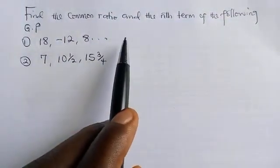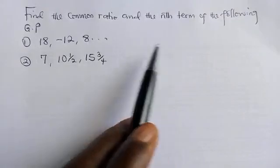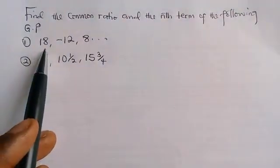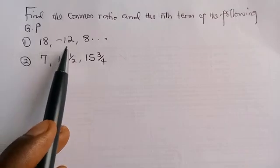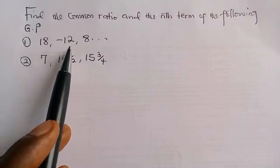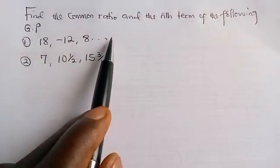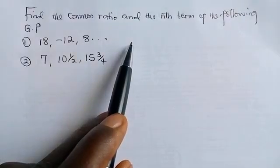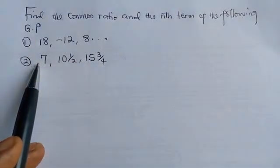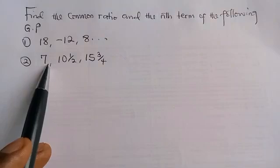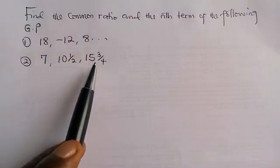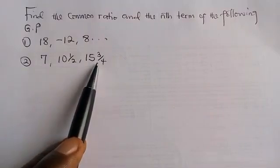Find the common ratio and the nth term of the following GP. The first sequence is 18, minus 12, 8, continuing as an infinite sequence. For the second one, we have 7, 10 whole number 1 over 2, and 15 whole number 3 over 4.